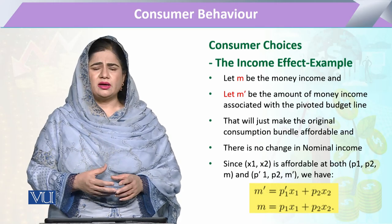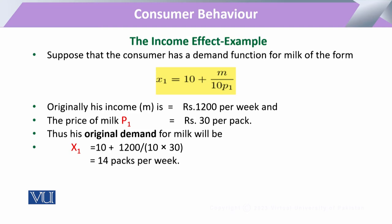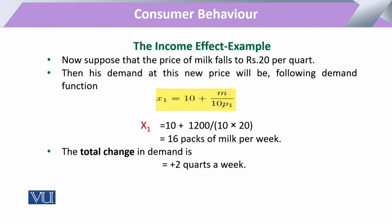Then we will calculate the proportion of change that is under the income effect. We will use an example where the consumer demand function is expressed, and the consumer has an income of rupees 1200 and an initial price of 30. At this price, the consumer has an initial demand of x1 equal to 14 packs.